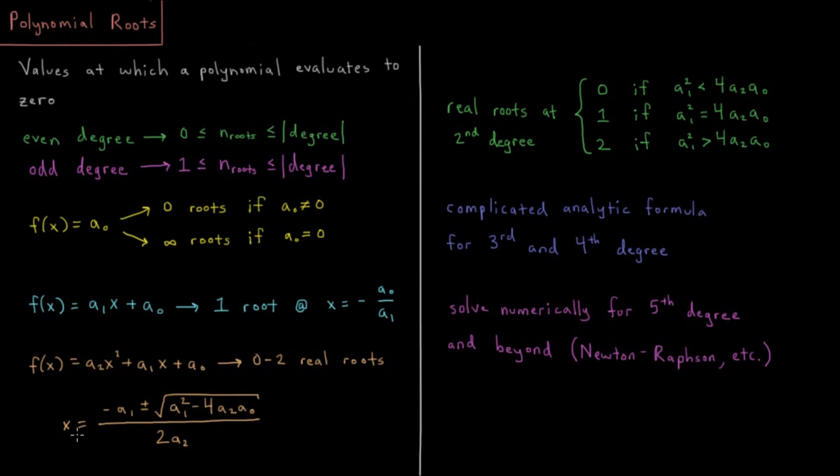So the solution to this is the familiar, if I call this a, b, and c, would be negative b plus or minus square root of b squared minus 4ac over 2a, but I've labeled these differently, so I have the labels that I've used in there.